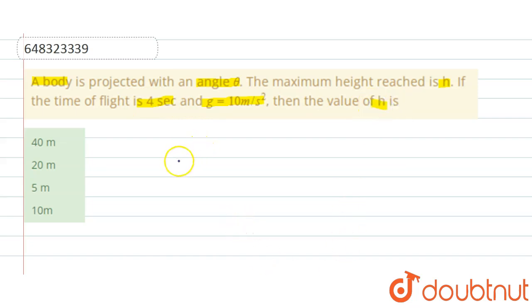Now students, here a body is projected with some velocity with the horizontal making an angle theta and this is its path. Now the total time for this path is given as t equals 4 seconds. Right?